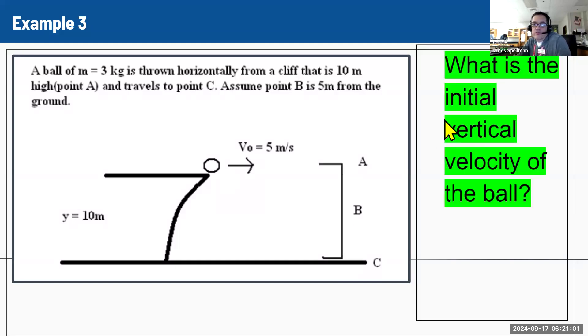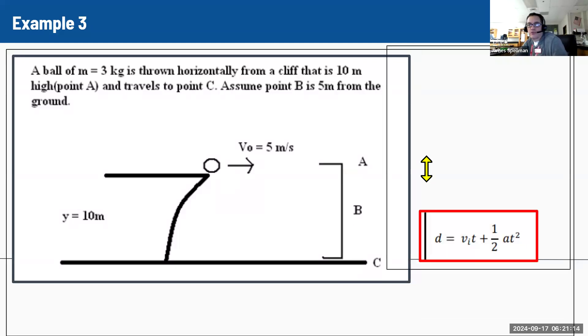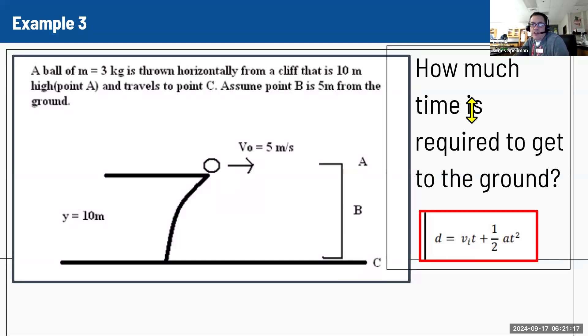So a number of questions. What's the initial vertical velocity of the ball? Vertical is up and down. So how fast is it going up and down? Hopefully we know at this point zero, because if we're throwing something sideways or we're dropping it, it's still got the same vertical speed.